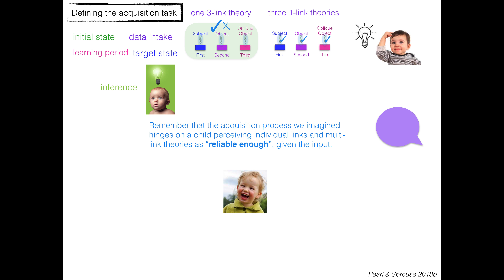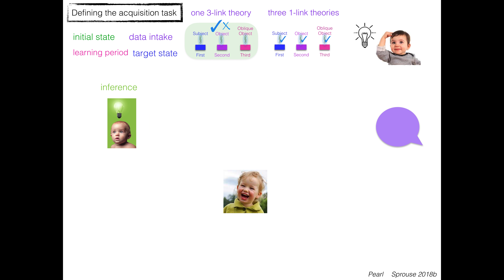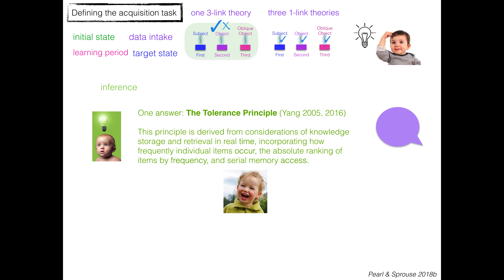The acquisition process we imagined hinges on a child perceiving individual links and multi-link theories as reliable enough given the input. How can 'reliable enough' be implemented? One answer is to use the tolerance principle developed by Charles Yang. This principle is derived from cognitively plausible considerations of knowledge storage and retrieval in real time. It incorporates how frequently individual items occur, the absolute ranking of items by frequency, and serial memory access.